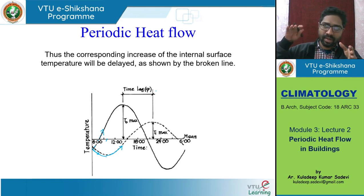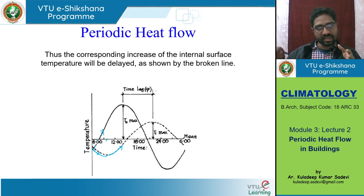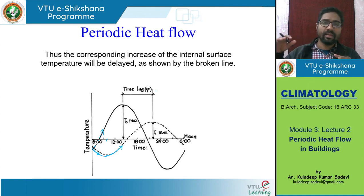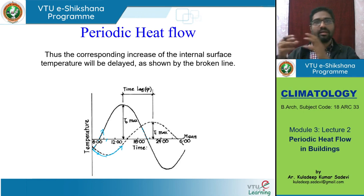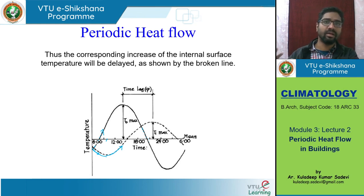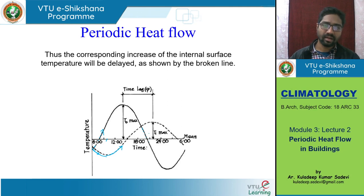When outdoor temperatures are coming down — by evening when sunset is happening, when sun is gone and heat is being dissipated — there is no additional heat coming and the Earth is releasing its stored heat. At that time in the evening, after 6 PM, outdoor temperatures will be lesser compared to indoor temperatures. Indoor temperatures are slowly rising, the wall is heated up, but outdoor temperatures have started coming down. When outdoor temperatures fall below indoor, the heat from indoor and the heat stored in the wall starts getting dissipated to the outdoor environment. The inner temperatures then also start falling down.